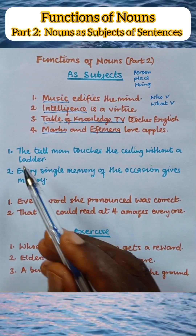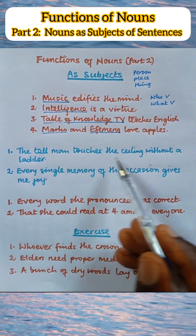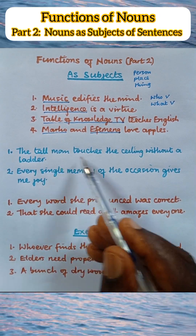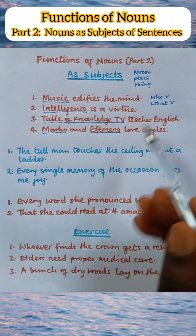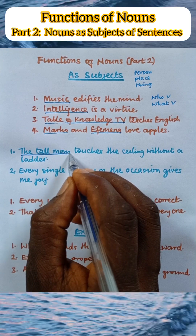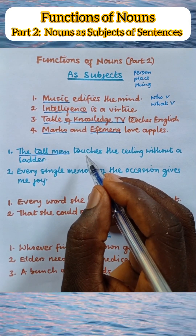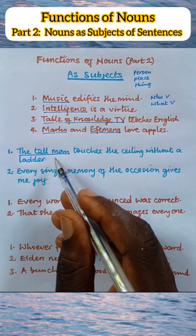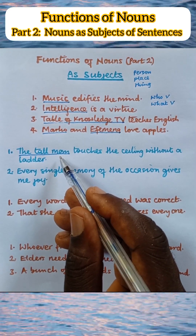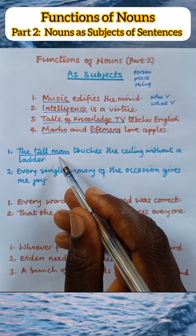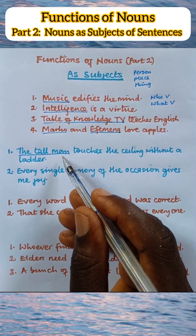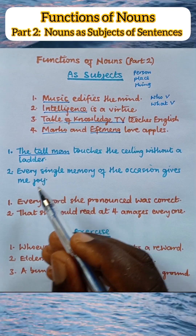Let's look at this: 'The tall man touches the ceiling without a ladder.' The verb of interest is 'touches,' and we ask, 'What touches the ceiling?' It is 'the tall man.' So the tall man is the subject of this sentence. But 'the tall man' is a phrase, and at the same time it occupies the position of a subject, so it is a noun. The expression 'the tall man' is therefore a noun phrase.